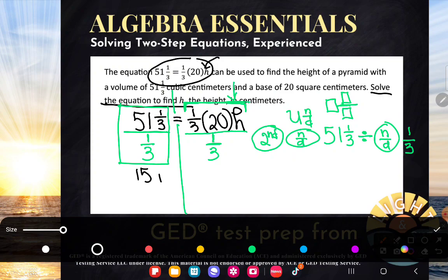so 51 and 1/3 divided by 1/3 gives me 154. And a lot of students then think that they did something wrong. Oh my gosh, that doesn't make sense. How'd I get a bigger number? No, it makes total sense. If you have 51 things and you break each thing into pieces, I'm dividing it into thirds.